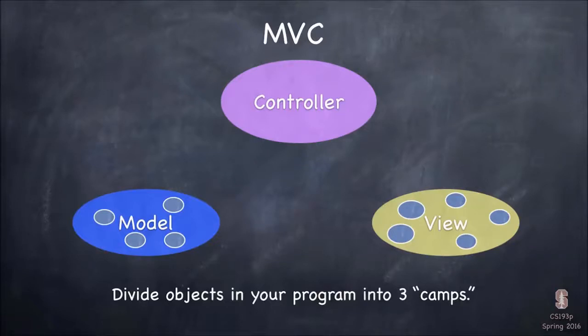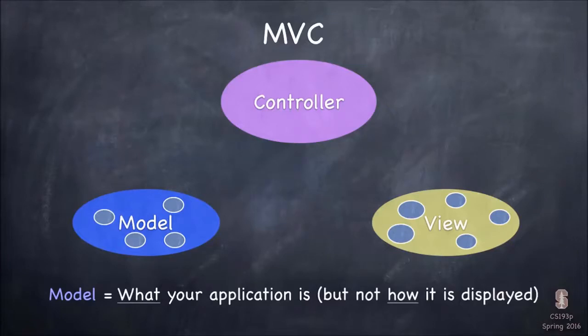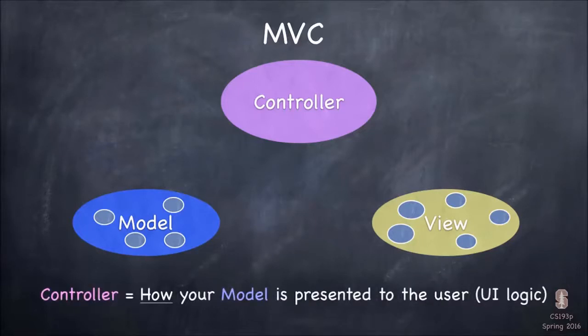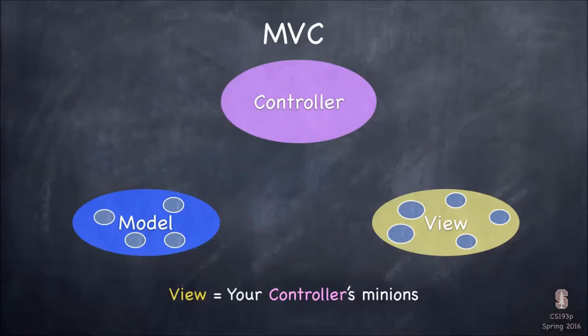The three camps pictured here are the model camp. The model camp is what your application does. Nothing about how it's drawn on screen or anything like that. It's not how it's displayed, it's just what it is. So for a calculator app, what it is, it's a calculator, so the model is probably gonna be the part that does calculating. Next piece is the controller. The controller is how your model is displayed on screen. It's kind of the how. This is basically all your UI logic goes into your controller. And the view you can think of as your controller's minions. The things that the controller's gonna use to put things on screen, so that's buttons and labels and tables and all those kind of things that the controller needs to display what's in the model and to get input from the user to update the model as well. So those are the three camps.